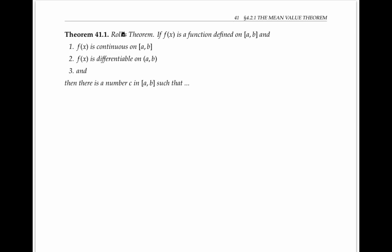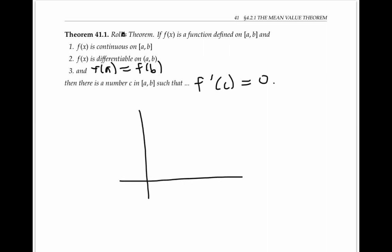Rolle's theorem is an important special case of the mean value theorem. If F is a function defined on the closed interval [a, b], continuous on that whole closed interval, differentiable on the interior of the interval, and if F(a) equals F(b), then there is a number C in the interval [a, b] such that F'(C) equals zero. If we look at a graph of such a function that has equal values at a and at b, we can see where its derivative has to be zero — at a maximum or a minimum in between a and b.